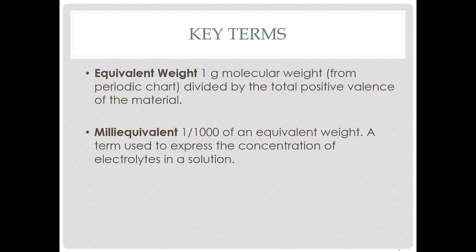Some key terms are equivalent weight which is one gram of molecular weight from that periodic chart. So think of hydrogen, helium, carbon, those molecular weights and it's divided by the total positive valence of the material.